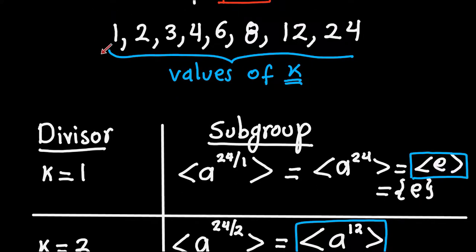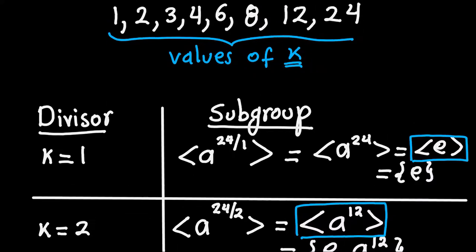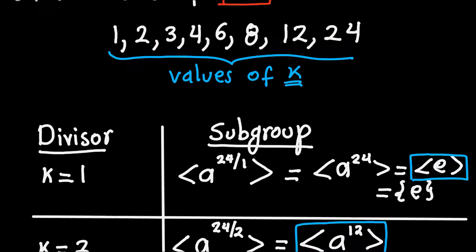For K equals 1, the subgroup is generated by A to the N divided by K, which is A to the 24. But A to the 24 gives us the identity because A has order 24. So this is the group generated by the identity, which has only one element. The divisor 1 gives us one of the trivial subgroups of the group generated by A.